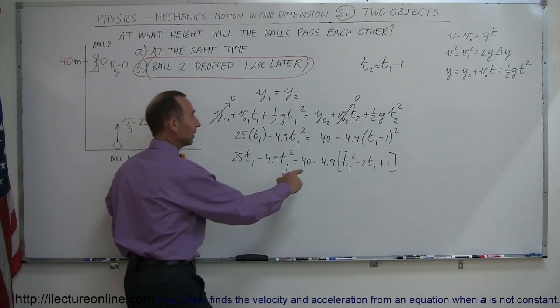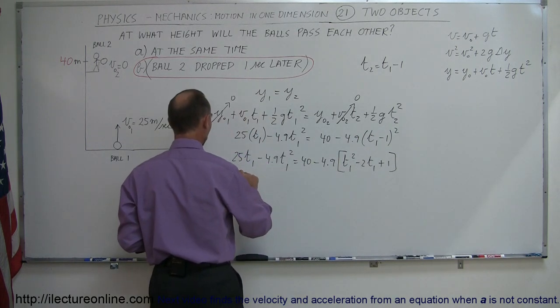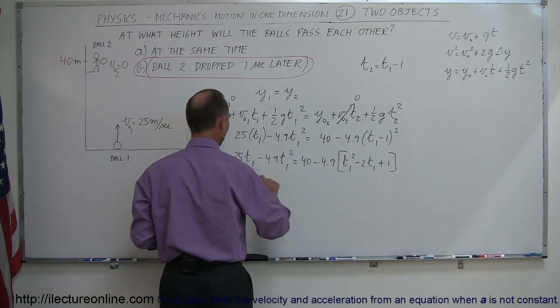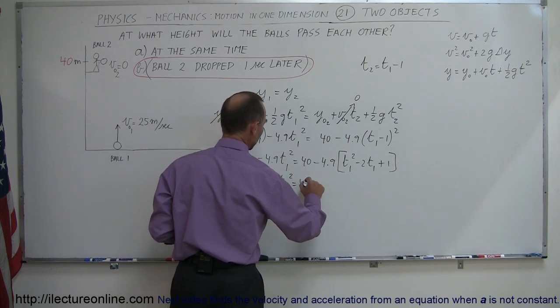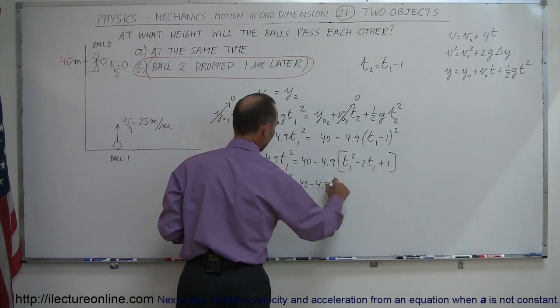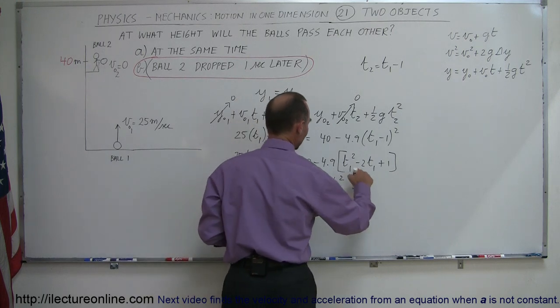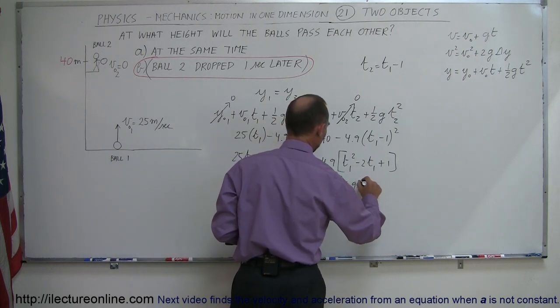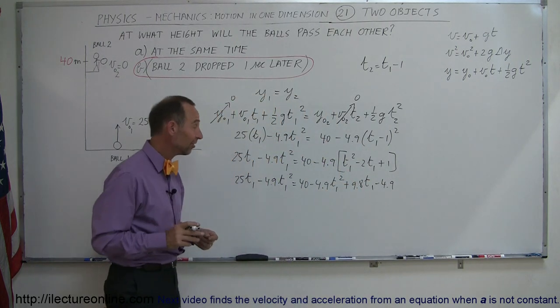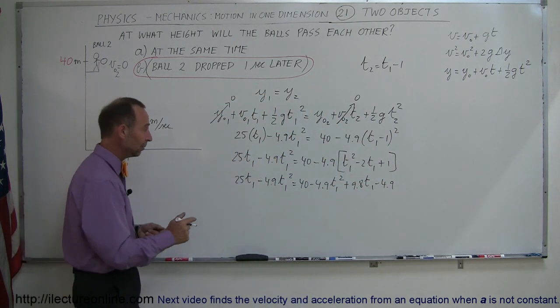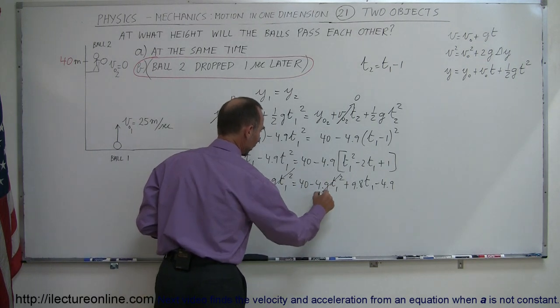Multiplying this through and getting rid of brackets, we get 25t1 minus 4.9 t1 squared equals 40 minus 4.9 t1 squared plus 9.8 t1 minus 4.9. What's nice about this is that the square terms cancel out, so this cancels out with this one.